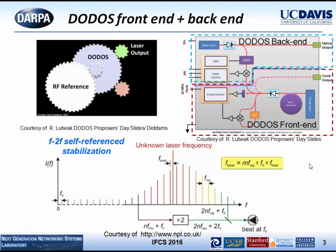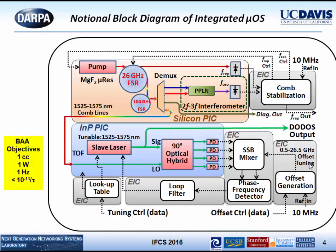That's basically the front end and back end. Our approach is based on two high-Q resonators with Q higher than 10 billion — a 26 GHz resonator and a 104 GHz resonator. The back end consists of tuning a tunable laser in reference to those comb lines; the gray boxes are the electronics.